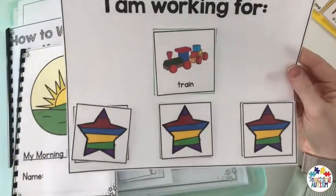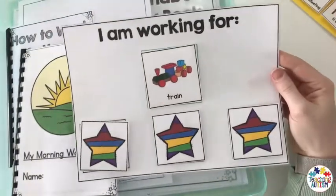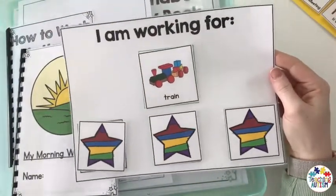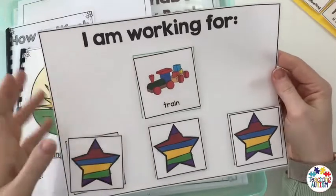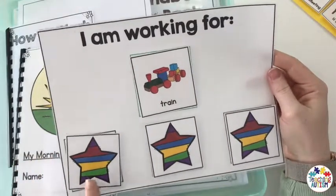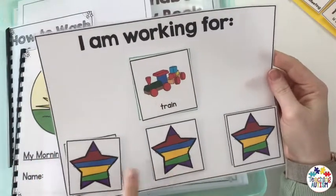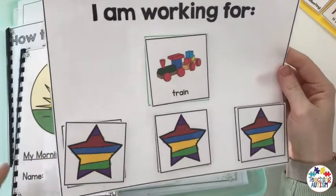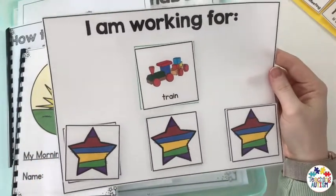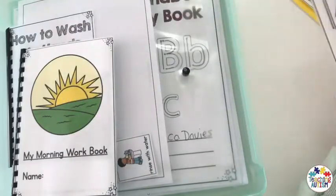I also use an 'I am working for' chart. This student is working for a train, and he will gain a star reward after each piece of work is completed by him.